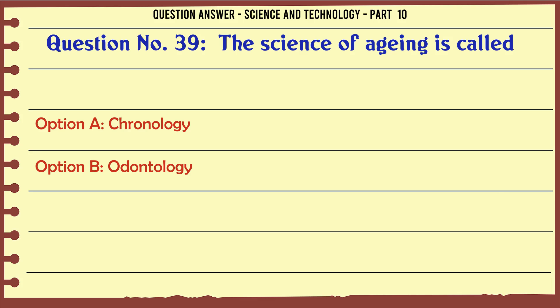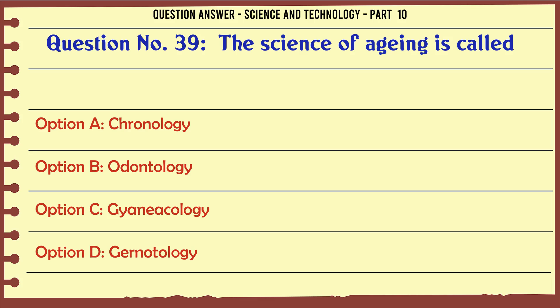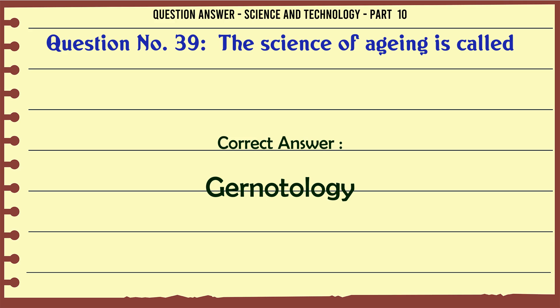The science of aging is called. A. Chronology. B. Odontology. C. Gynecology. D. Gerontology. The correct answer is Gerontology.